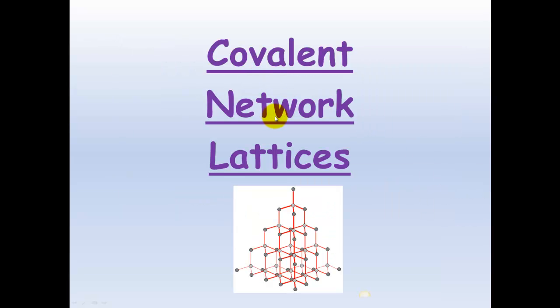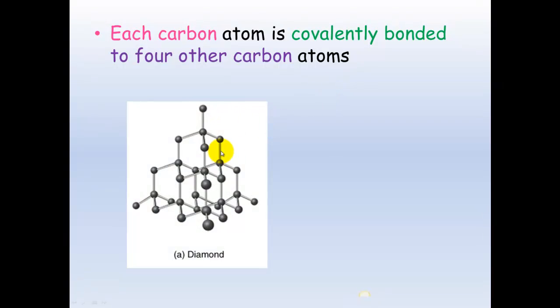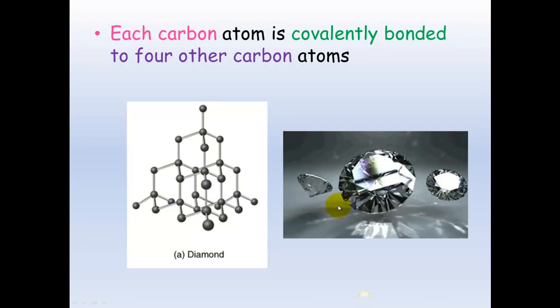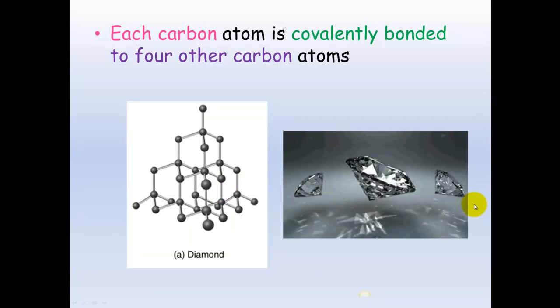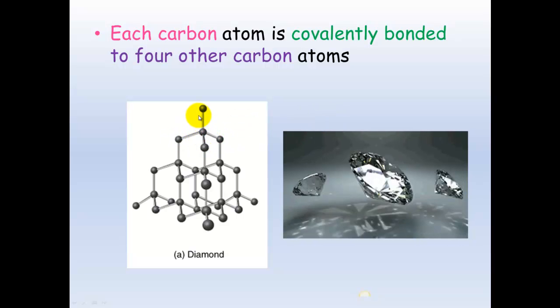So let's look firstly at covalent network lattices. Each carbon atom is covalently bonded to four other carbon atoms. And if you have a look at this model here, you'll see that each of these carbons, so here's a middle carbon, is covalently bonded to four other carbon atoms. That gives it a really strong structure, and diamond being one of the strongest structures in the world because of these really strong covalent bonds.